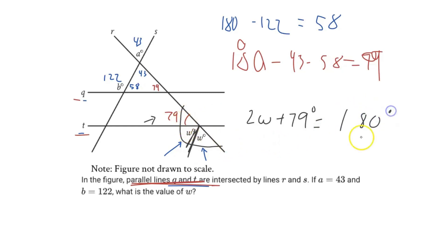So now we can subtract 79 from both sides. We get 101 equals 2w. Divide both sides by 2, and we get w equals 101 over 2, or 50.5 degrees as the value of w.